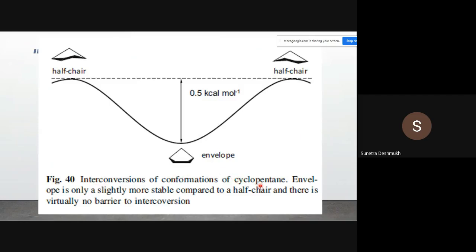The envelope conformation is only slightly more stable than the half chair by 0.5 kilocalories per mole. There is virtually no barrier to interconversion between the two conformations, as shown in the energy level diagram for the conversion of half chair to envelope and back.